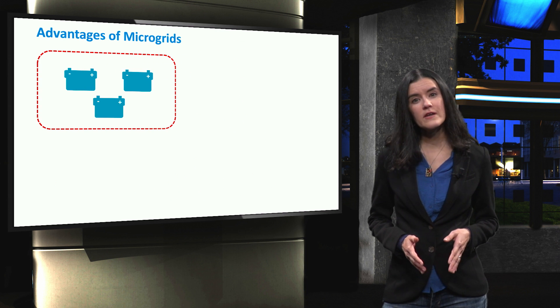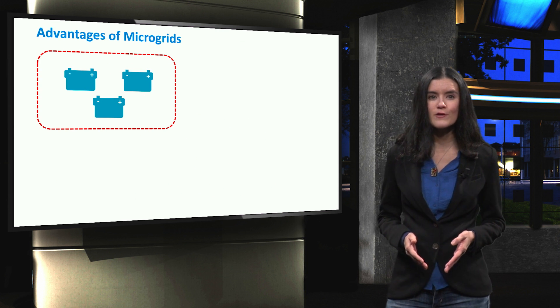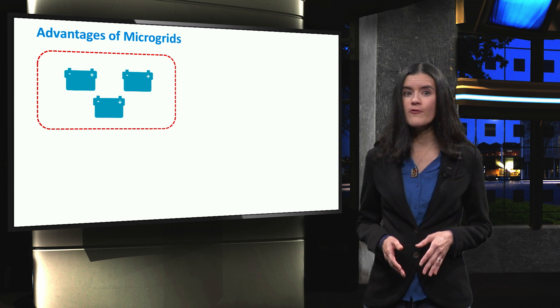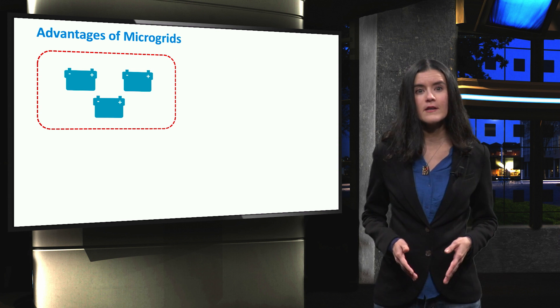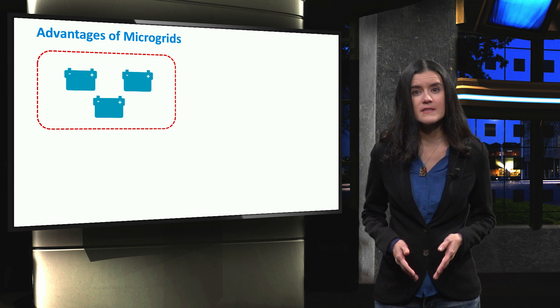Microgrids have several advantages compared to existing passive distribution networks. They are more resilient to failures, disturbances and faults, particularly if battery storage systems are present.